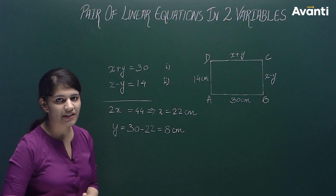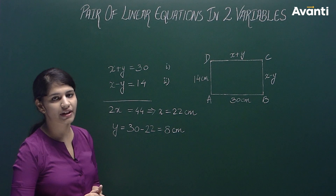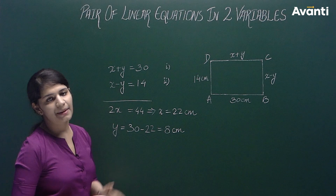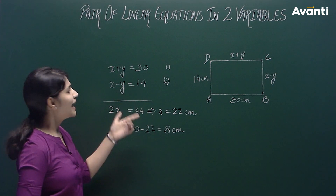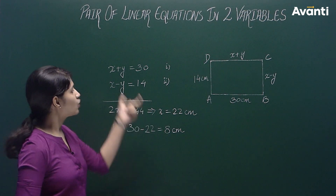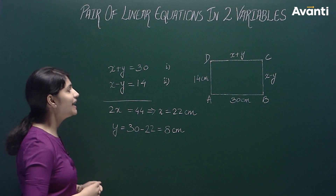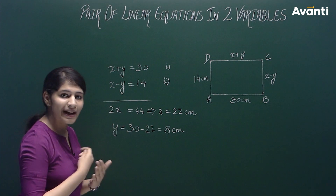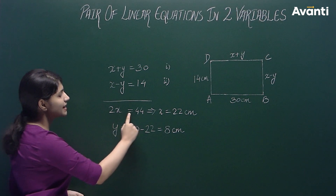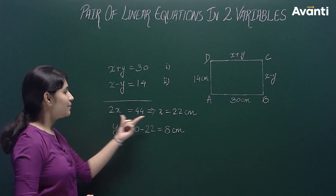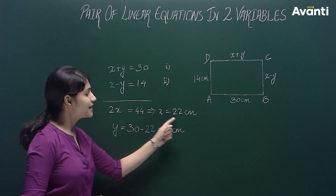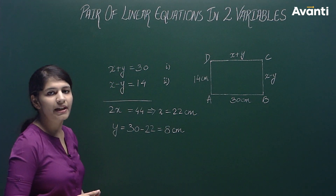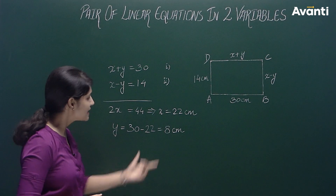Boards में आज तक specify नहीं किया गया कि आप किसी particular method से ही solve करें. So whichever method you are most comfortable with, उस method से आप इस type के questions को solve कर सकते हैं. यहाँ पर elimination method is the easiest for me, तो मैं इसे elimination method से solve कर रहे हूँ. I'll just add these two equations, जिससे हमारा y वाला term automatically eliminate हो जाएगा and we'll get 2x equal to 44. So x is equal to 22 cm and putting this value in either equation we get y equal to 8 cm.